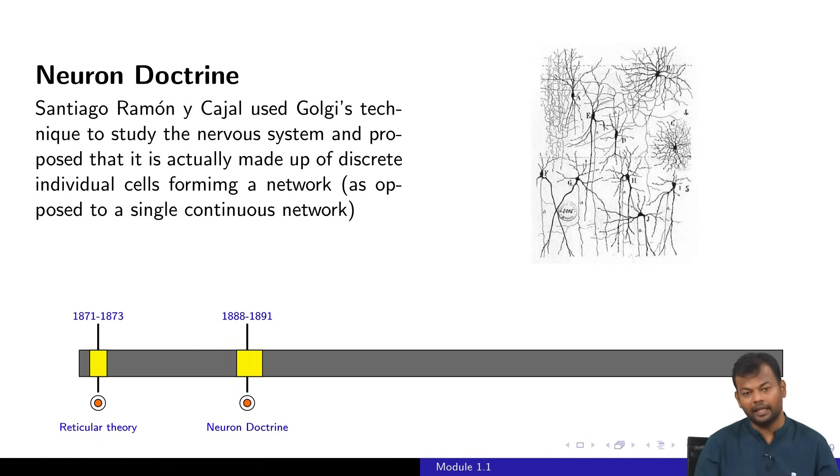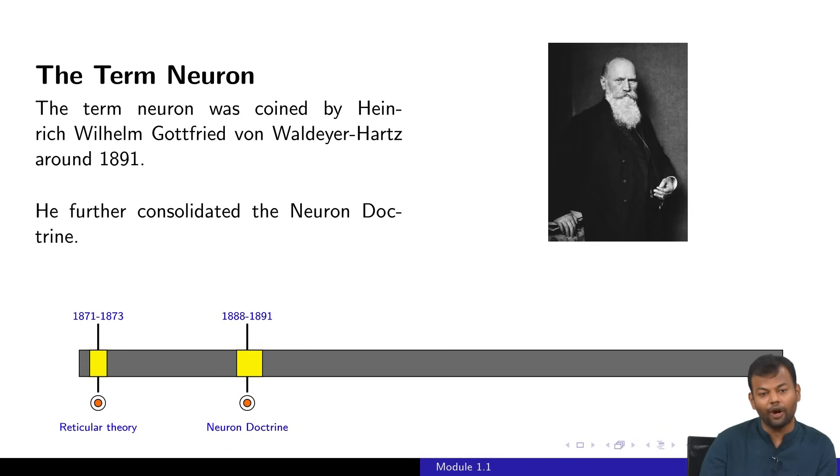Interestingly, Santiago Cajal used the same technique which Golgi proposed and studied the same tissue, but came up with the conclusion that this is not a single cell. This is actually a collection of various discrete cells which together form a network. It is a network of things as opposed to a single cell. This eventually came to be known as the neuron doctrine, although this was not consolidated in the form of a doctrine by Cajal.